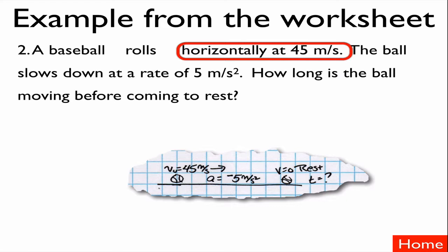The ball's rolling at 45 meters per second horizontally, so there's my velocity. I need to know if it's the beginning or end of my story — I can tell it's the beginning. It's slowing down at 5 meters per second squared, so that's a change in velocity, that's our acceleration, and I made it negative because it says it's slowing down. The question asks how long the ball is moving — in this case, 'long' means time. And it comes to a rest, so at the end of its trip it's going to have a final velocity of zero.